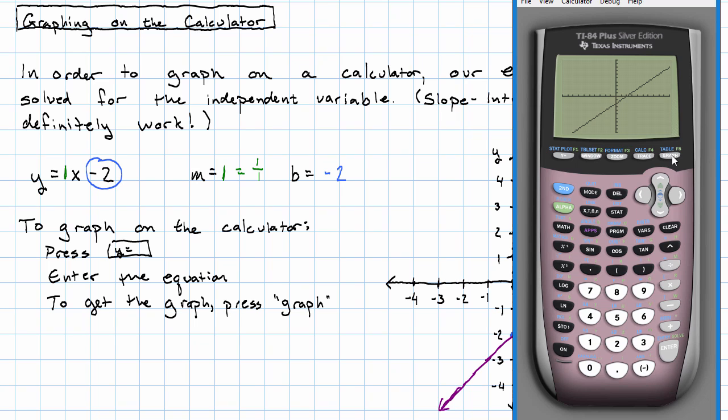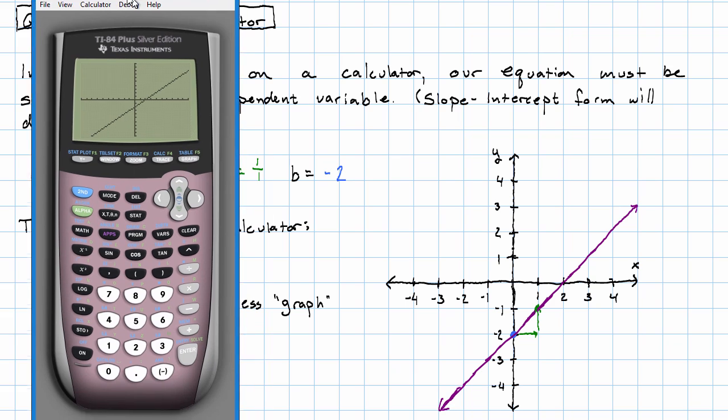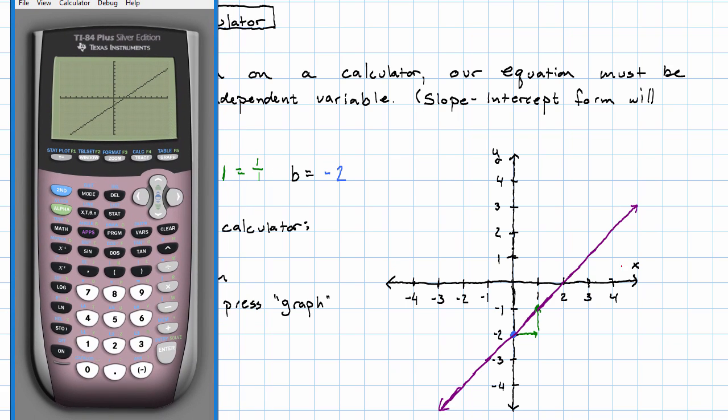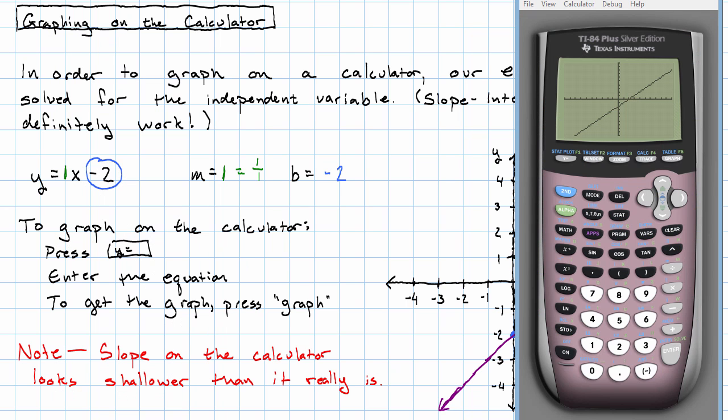Hmm. We notice that doesn't look quite like our picture. In particular, notice that in our picture we see a slope of 1, but on the calculator, that slope looks shallow. It looks less than 1. The slope on the calculator looks shallower than it really is.